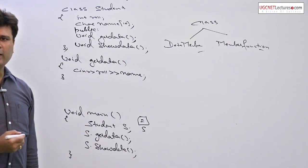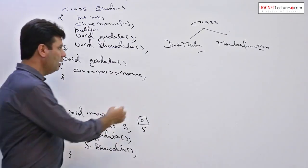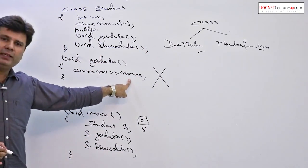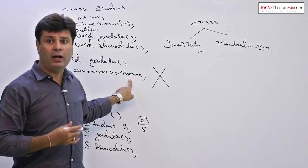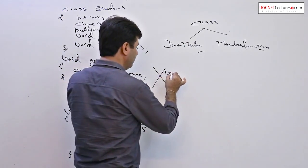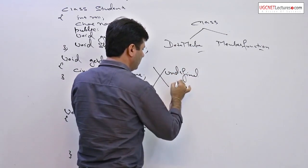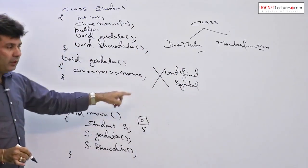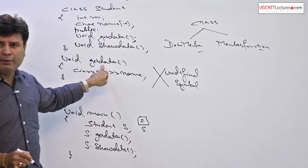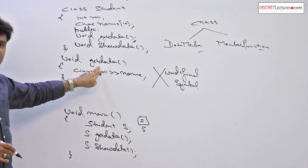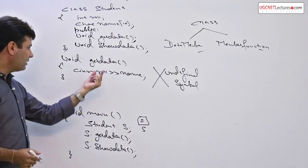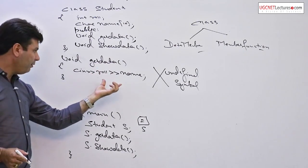If I define simply by writing void get data and use the variables inside, the compiler will give an error — row number and name are undefined symbols. Why? Because even though get data is declared within the class, for the compiler this get data defined outside is not a member function of class Student. The compiler considers it a non-member function with the same name, and within a non-member function you cannot access variables declared within a class.